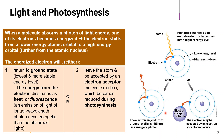As the electron returns to its normal state, the energy from the electron dissipates as heat or fluorescence — an emission of light of a longer wavelength photon, which is less energetic than the absorbed light. Alternatively, the electron will leave the atom and be accepted by an electron acceptor molecule, which becomes reduced during photosynthesis.